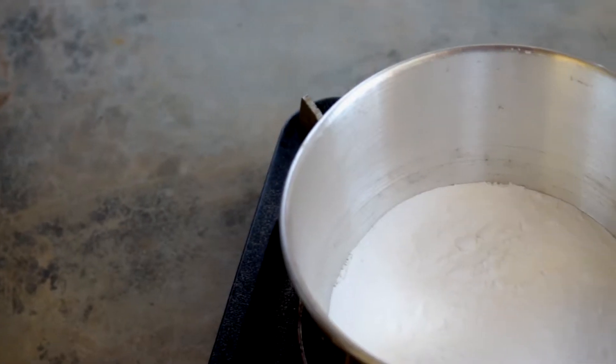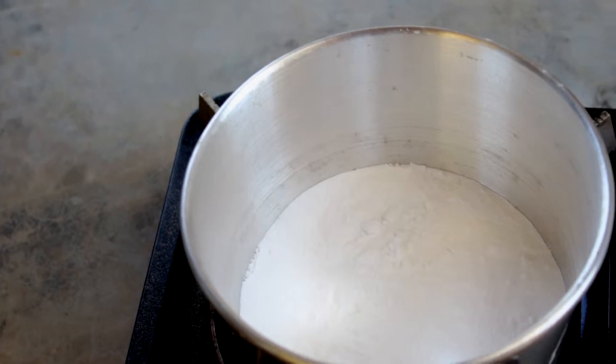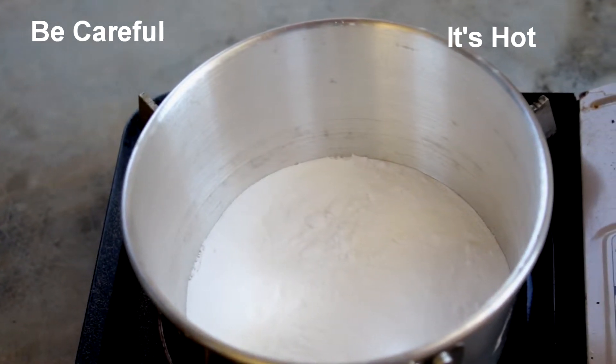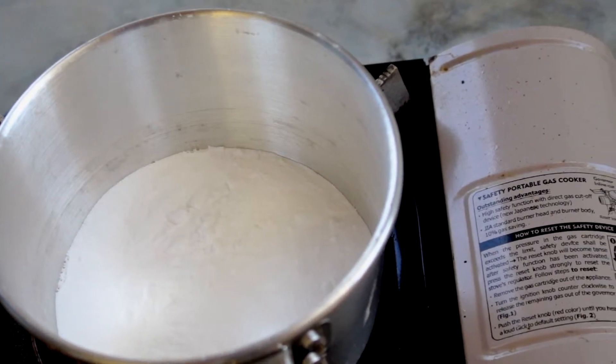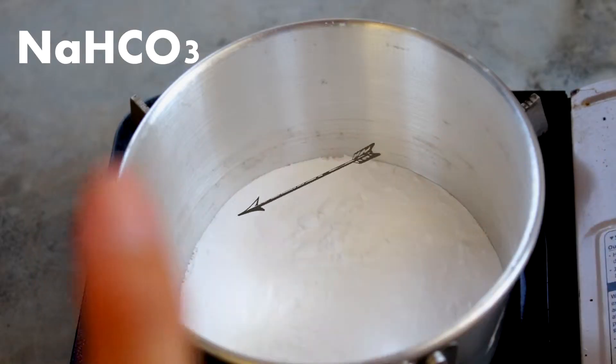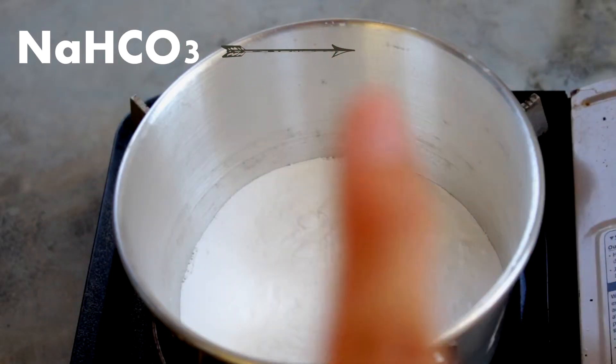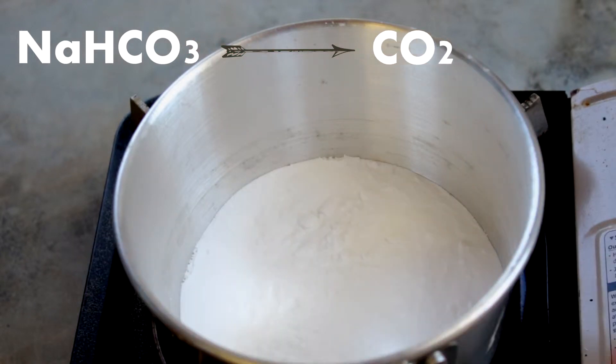Upon heating, sodium bicarbonate will undergo thermal decomposition gradually at around 50 degrees Celsius. At 200 degrees Celsius, the conversion is fast as sodium bicarbonate decomposes. It releases carbon dioxide gas and water, as shown in the equation above.